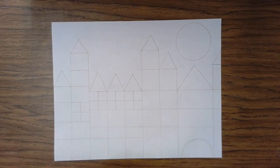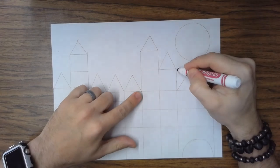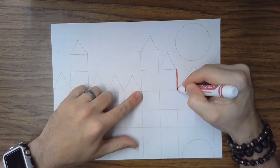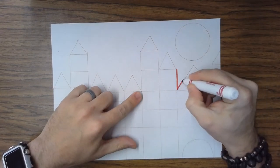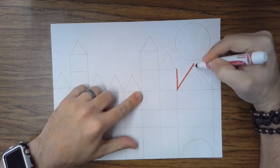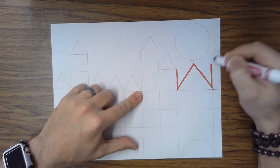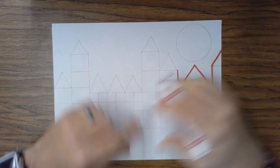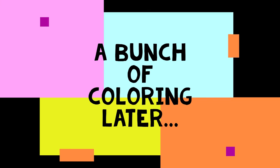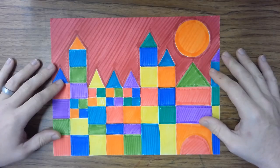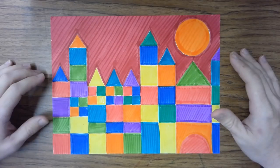Alright, let's color this guy. Just gonna take lots of bright colors, start filling everything in. And once you're done coloring, you have your own version of Paul Klee's Castle and Sun.